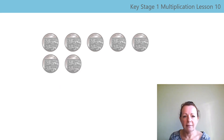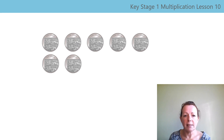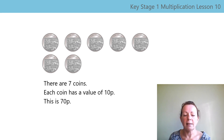Your turn again. What is the value of this set? Pause the video while you work it out. That's right, it's 70p. Let's say the stem sentences together: there are seven coins, each coin has a value of ten-p, this is 70p.